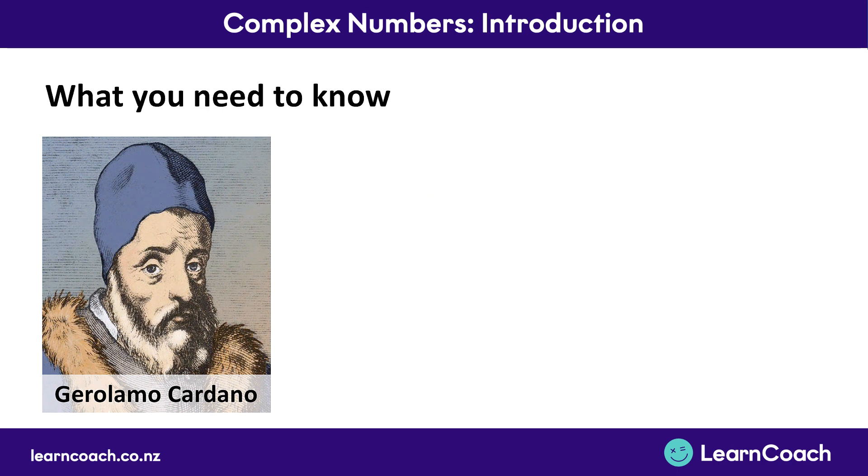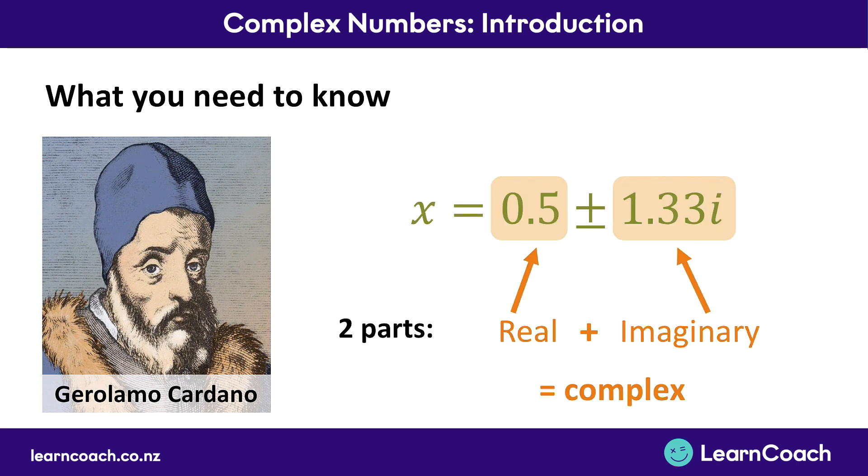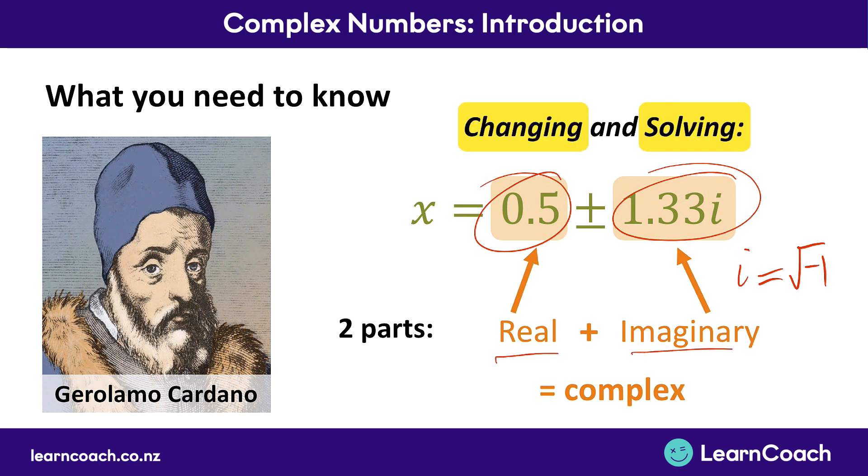The take-home message of what you need to know primarily is simply that a complex number has two parts. It has a real part and it has an imaginary part. And the imaginary part, which is what we call i, i equals the square root of negative 1. So that's the important thing of knowing what a complex number actually is—it's when you have these two parts together. And what's going to come up in your standard is changing and solving these complex numbers. And we're going to learn around 20 different skills over the series of videos about how you can change and solve these complex numbers. So that's all you need to take away from this video. Good luck with the rest of complex numbers.